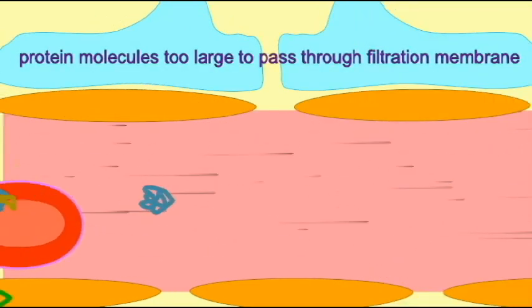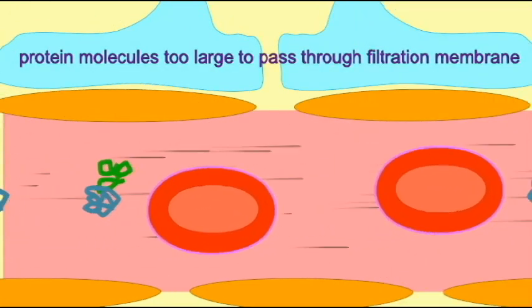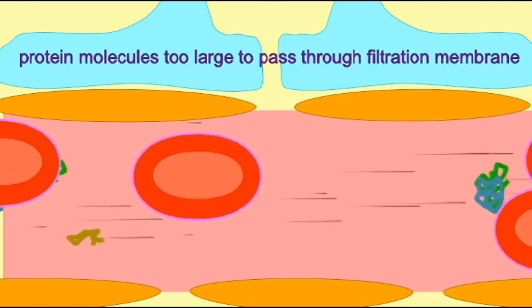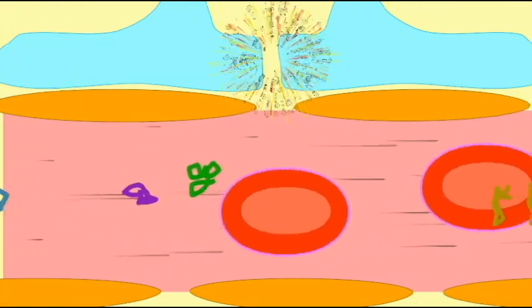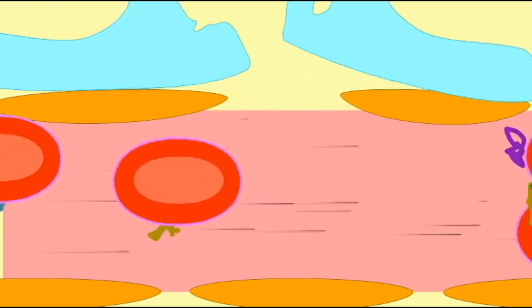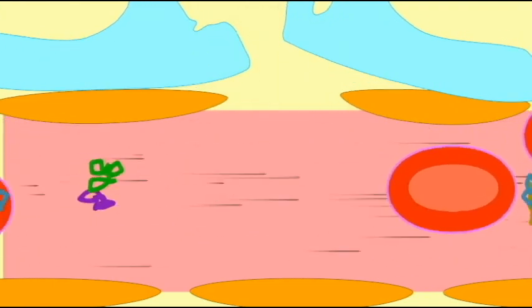Normally, proteins are too large to pass through the filtration membrane. However, if the kidneys are damaged, perhaps because of injury or trauma to the area or because of a bacterial infection.